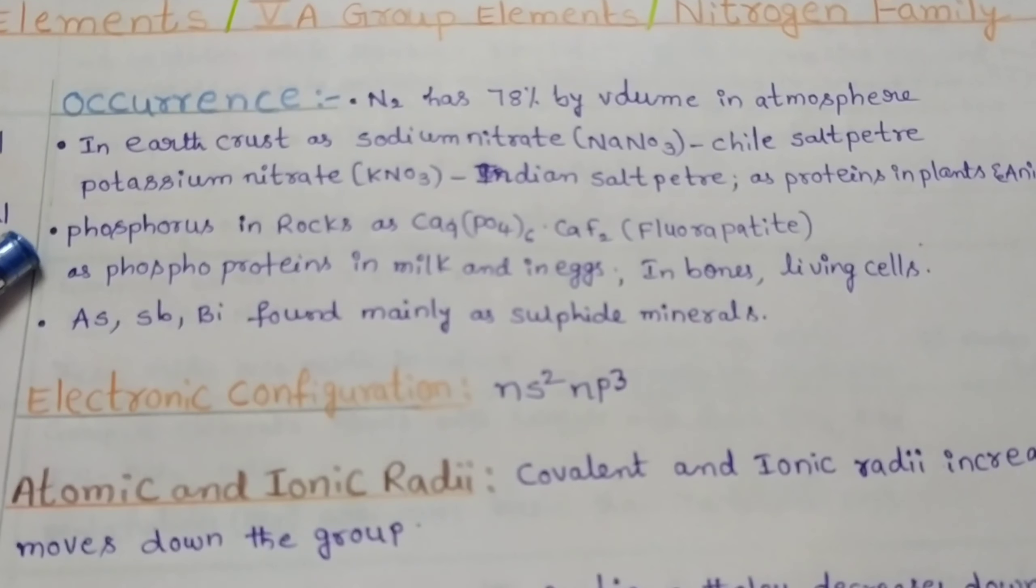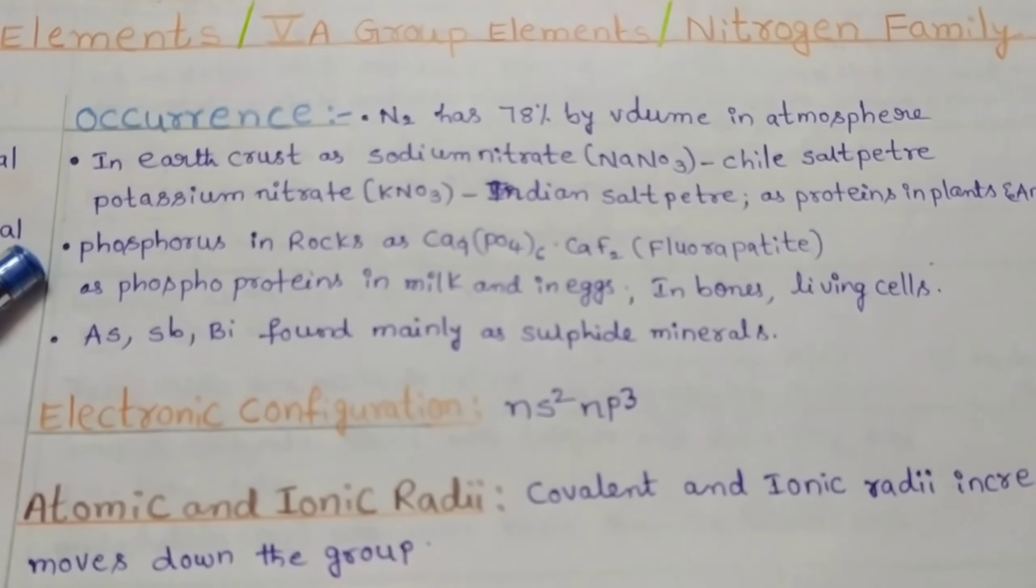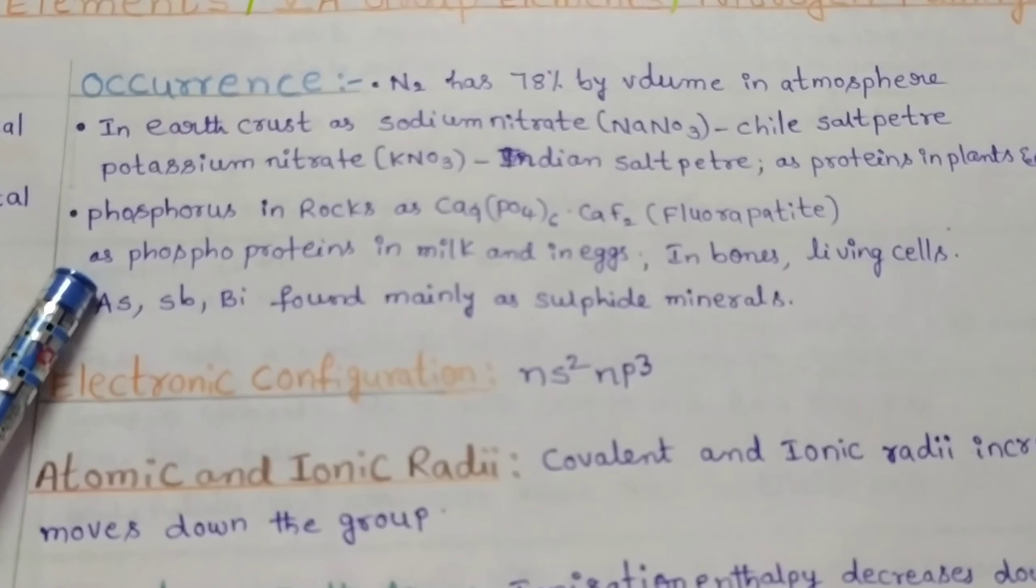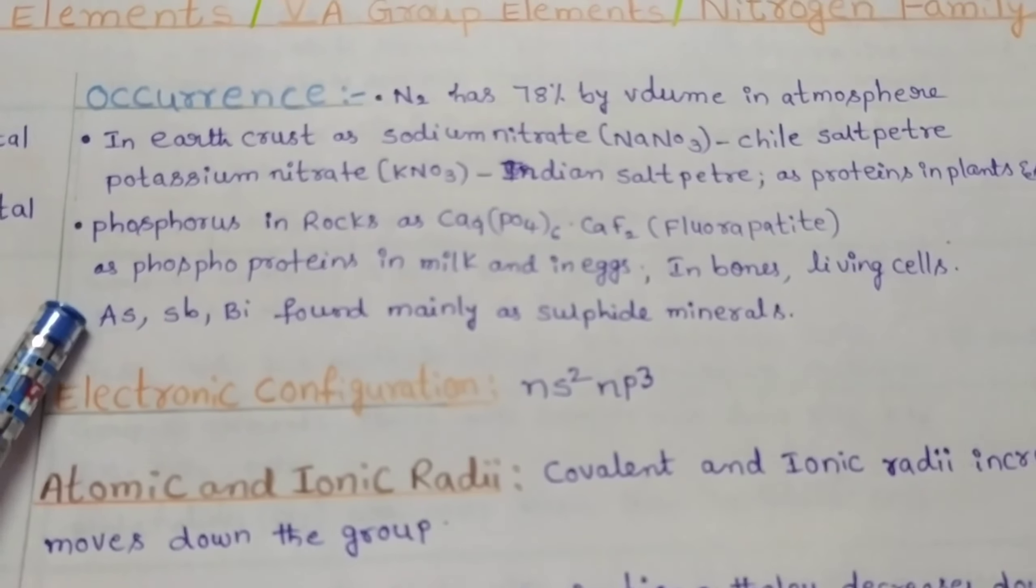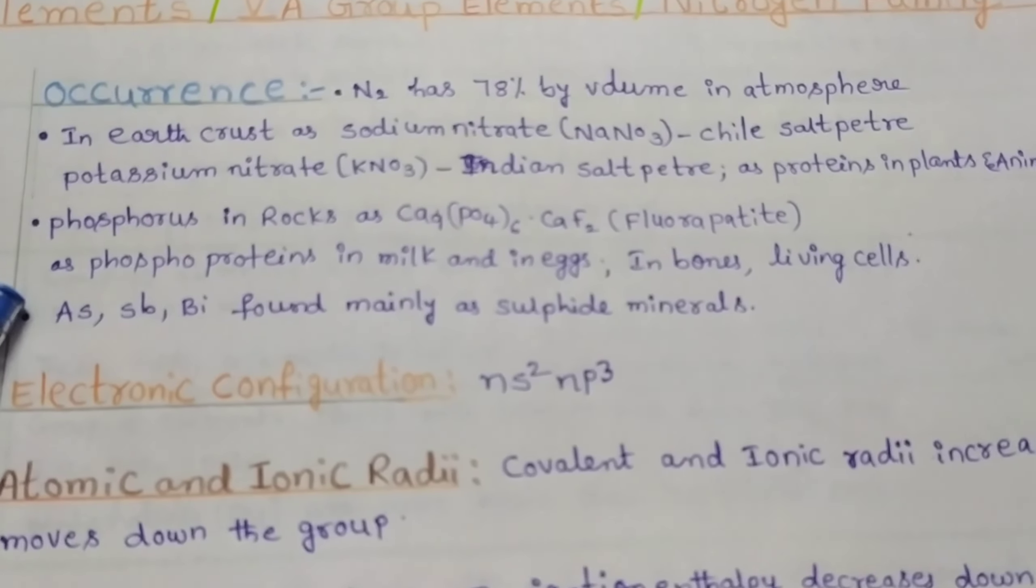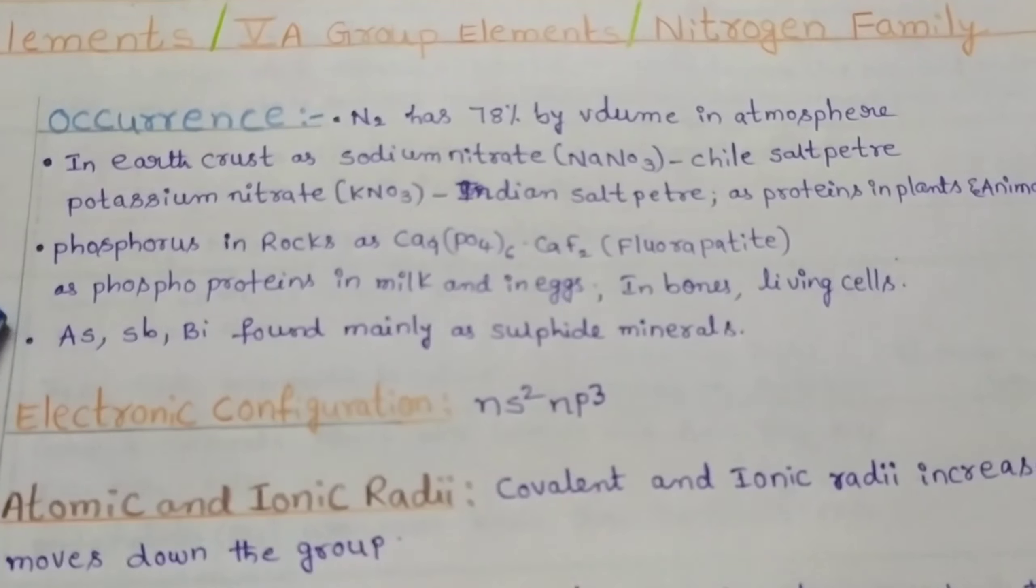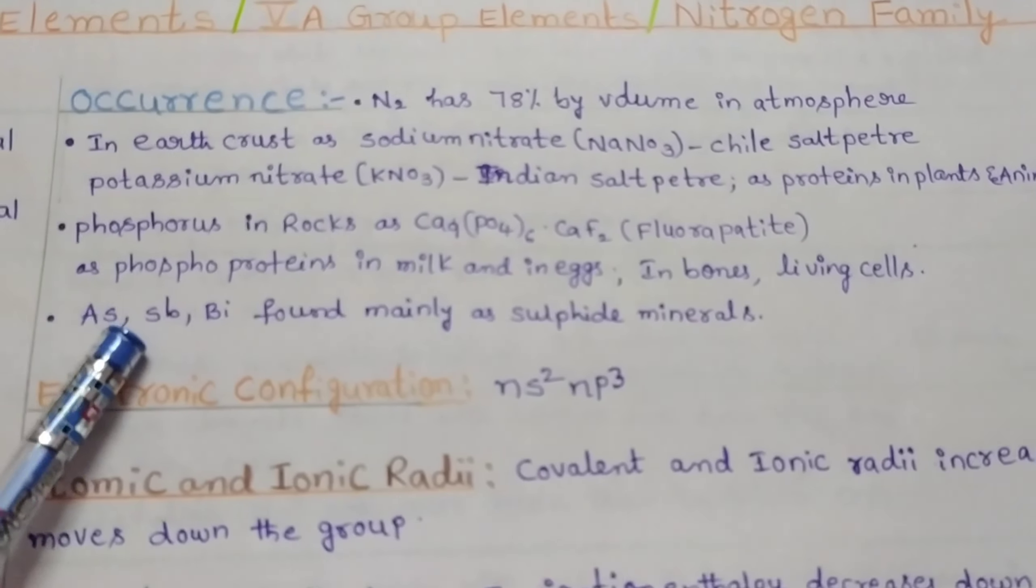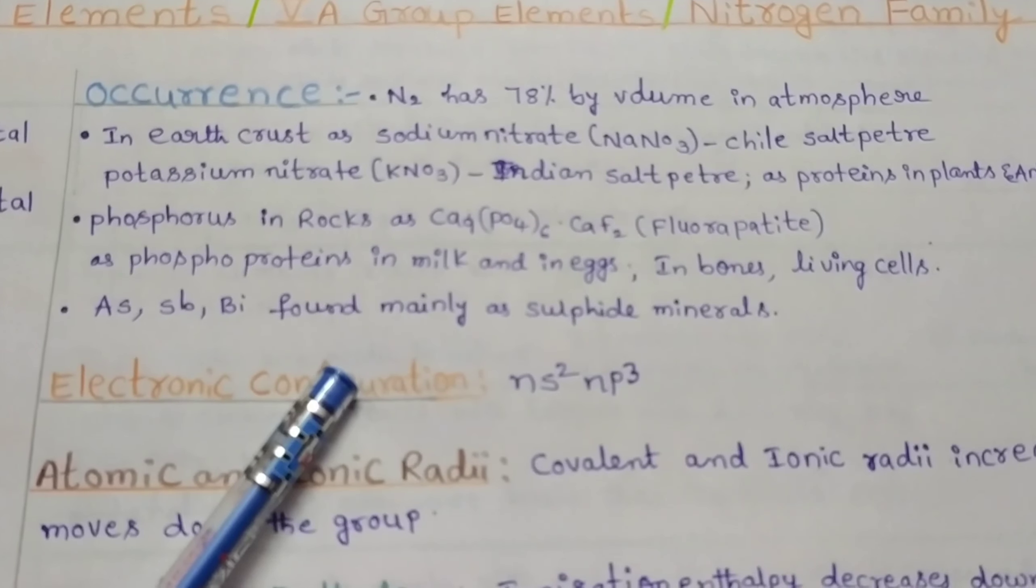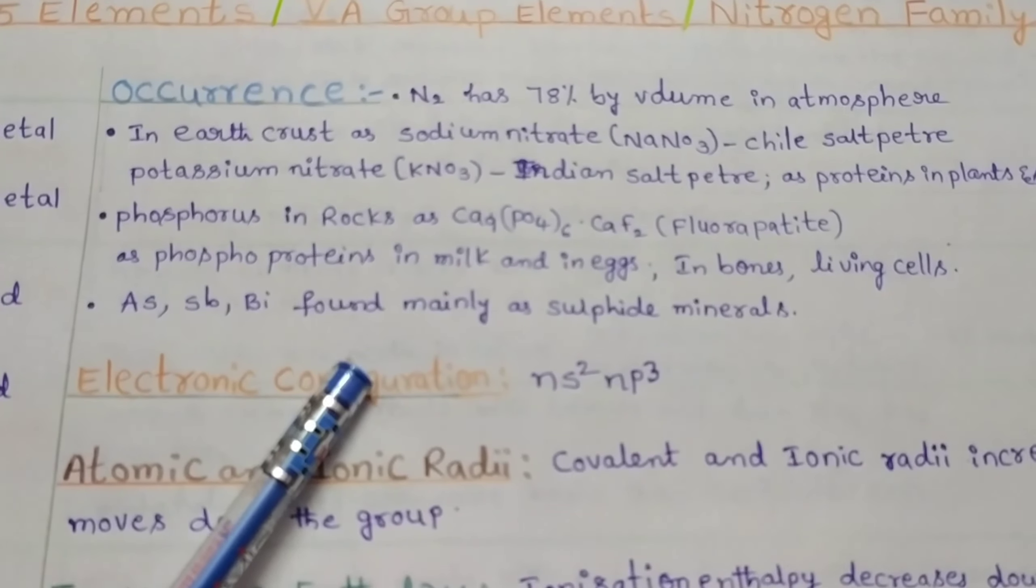Phosphorus is obtained in rocks as fluorapatite Ca₃(PO₄)₂. It is also obtained as phosphoproteins in milk and in eggs. It is also obtained in bones and living cells. Arsenic, antimony, and bismuth are found mainly as sulfide minerals.